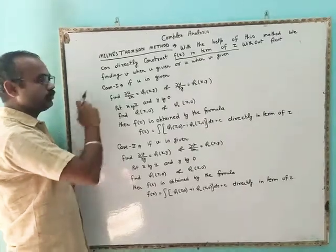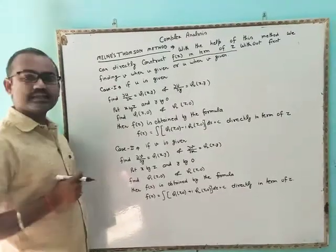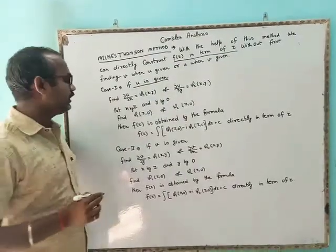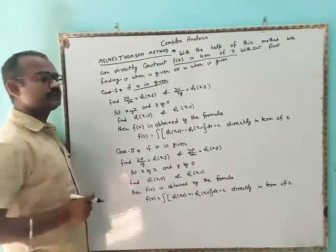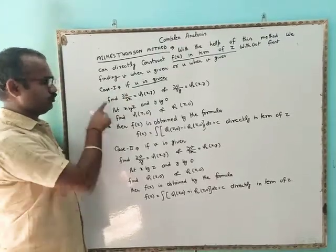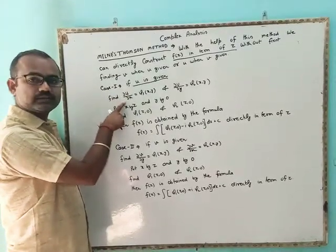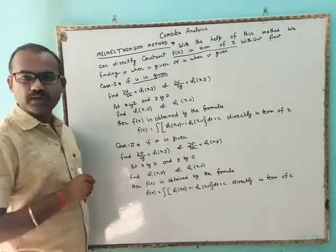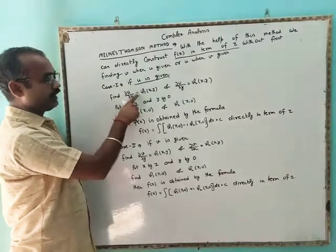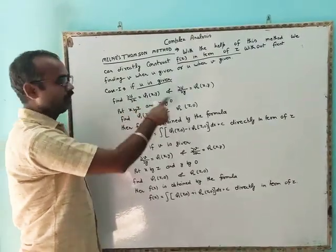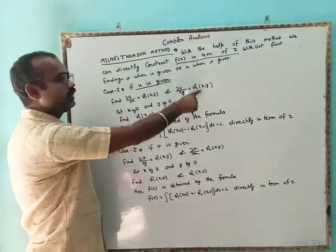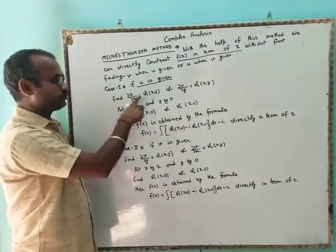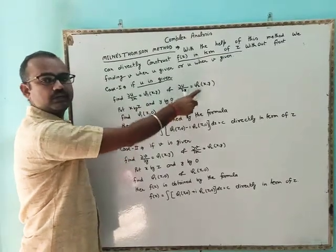Now we discuss the first case: if u is given. First, we find ∂u/∂x — we partially differentiate u with respect to x — and also ∂u/∂y. Then we write ∂u/∂x as φ₁(x, y) and ∂u/∂y as φ₂(x, y).